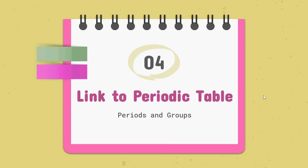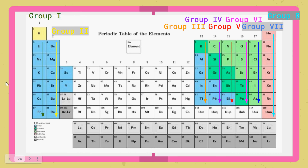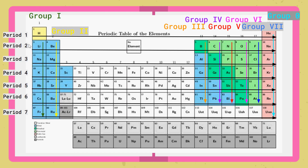Now the link to the periodic table. The vertical columns are called groups, and we use Roman numerals to label them: group 1, group 2. We skip the transition elements section, then group 3, group 4, group 5, group 6, group 7, and group 8 or group 0. The horizontal rows are called periods: period 1, period 2, period 3, period 4, period 5, and so on.